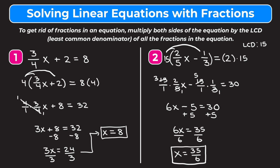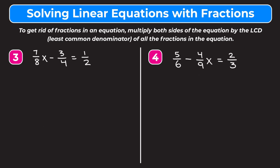Let's go through two more examples. I encourage you to pause the video and try them on your own, then watch me work through them to make sure you've solved them correctly. In example 3 we have three fractions: 7/8x minus 3/4 equals 1/2. We're going to do the same thing we did in number two — find the least common denominator of all three fractions. The least common multiple of 8, 4, and 2 is 8, so we want to multiply both sides of our equation by 8.